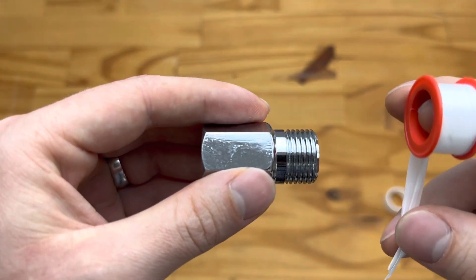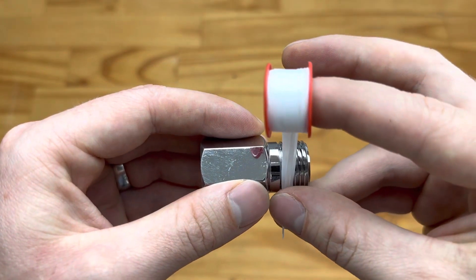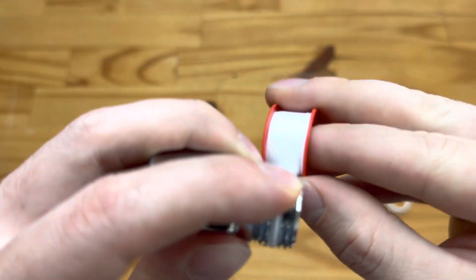So what you do is when you have your fitting in your left hand, you take your thread tape and place it over the top and roll.